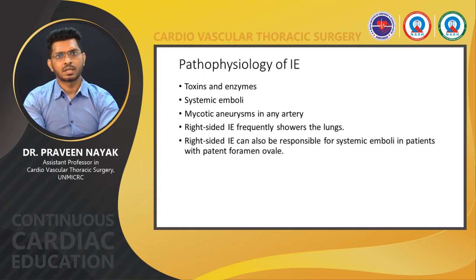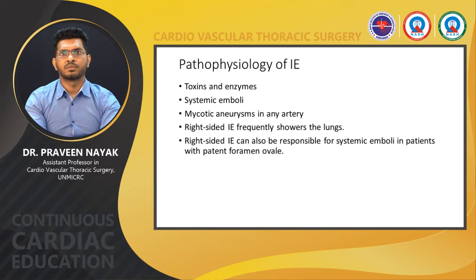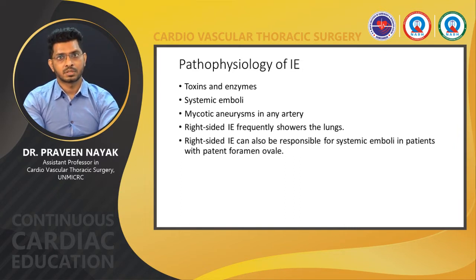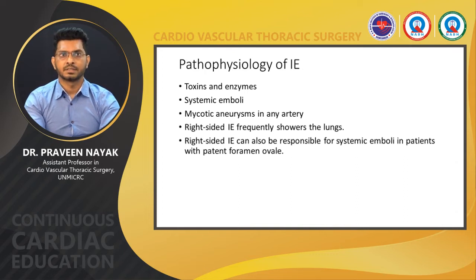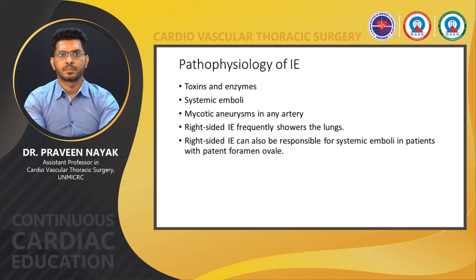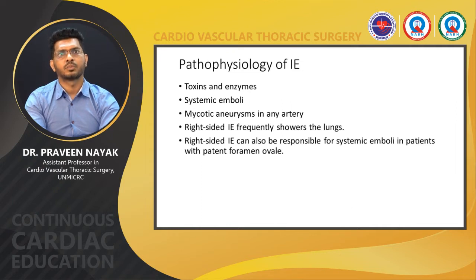The causative microorganism's position — whether it is on the aortic, mitral, or right-sided valve — and the type of infected valve, whether native or prosthetic, are important for pathology and prognosis. Bacteria and fungi have a species-specific repertoire of virulence factors that allow them to establish and maintain infective endocarditis. Emboli from these vegetations cause stroke, mycotic aneurysms, and related phenomena.